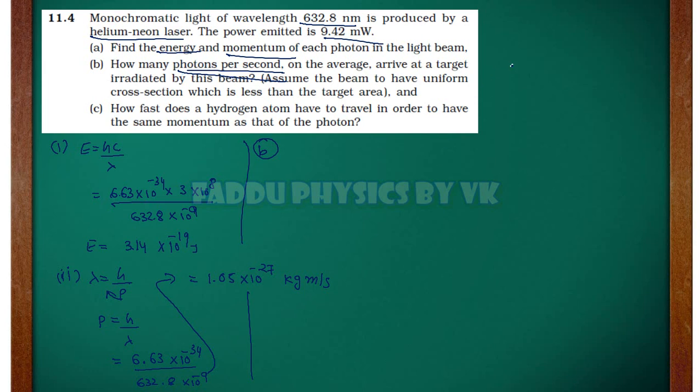This is a plate. The power production is 9.42 milliwatt. On average arrive at a target irradiated by beam. What is power? Power is equal to number of photons into one photon energy of each photon. This will be your power. How much energy in one photon into number of photons. This will be your power.